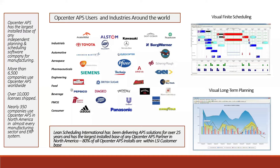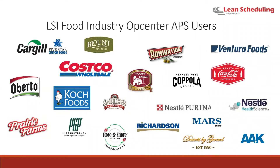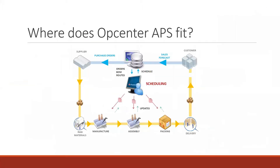I want to talk briefly about Lean Scheduling International. We've got a lot of experience — the people in our company have been doing this for over 25 years, and in North America we've got the largest install base. Roughly 80% of the installs of Preactor in North America are customers of ours. We have quite a few customers in the food industry, and these logos show some of our North American customers — there are different types of food manufacturing represented, which again reflects how flexible the product is.